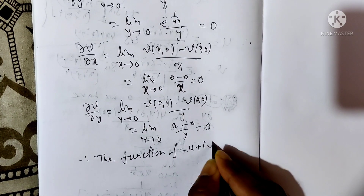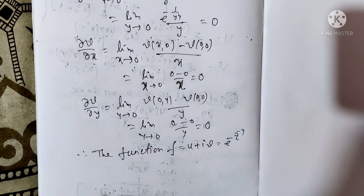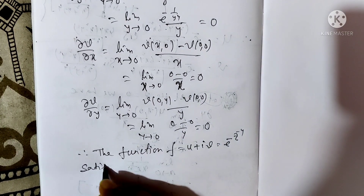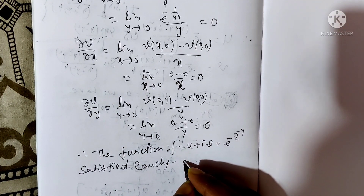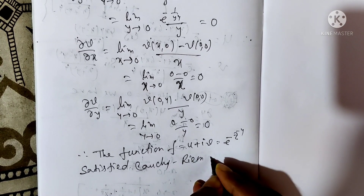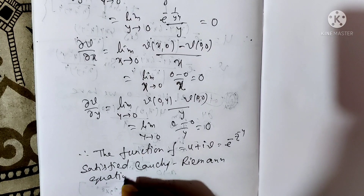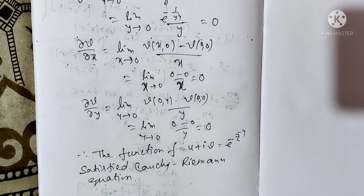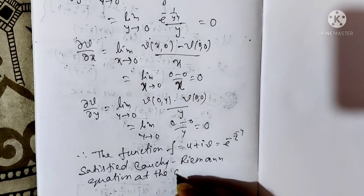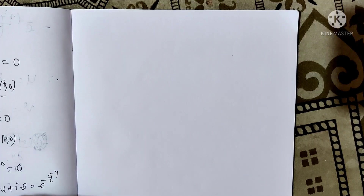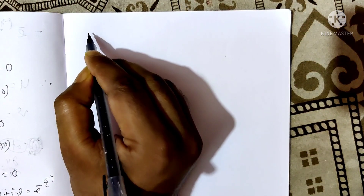f = u + iv = e^(-z^(-4)) satisfies the Cauchy-Riemann equations at the origin.